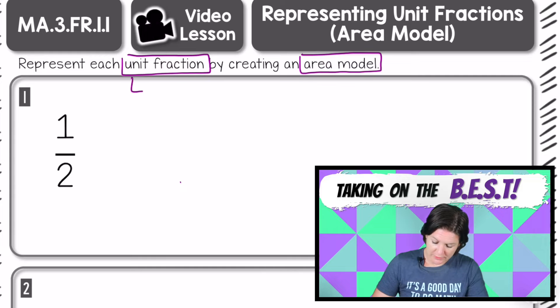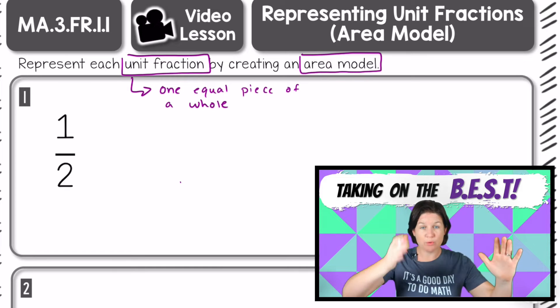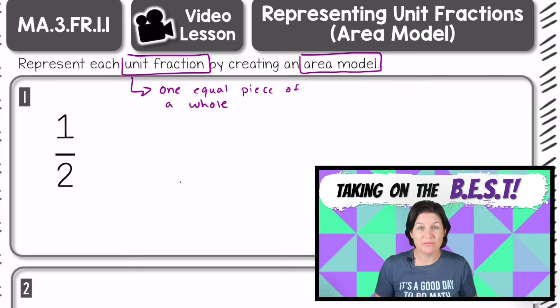Let's talk about what a unit fraction is and also label the parts of this fraction, and then we'll draw out the model. A unit fraction is one equal piece of a whole. So today we're just going to be talking about unit fractions. If we have a whole and it's broken into pieces, a unit fraction is just referring to one equal piece of that whole.